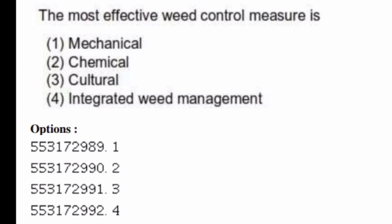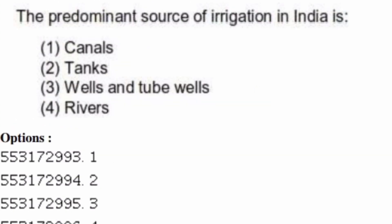The predominant source of irrigation in India is — options are: canals, tanks and dug wells, rivers. The right answer is option one, canals.